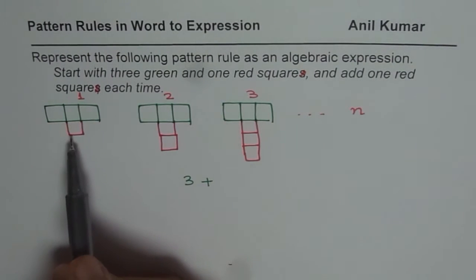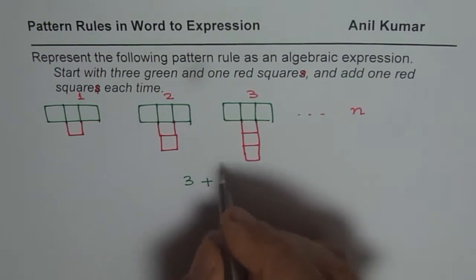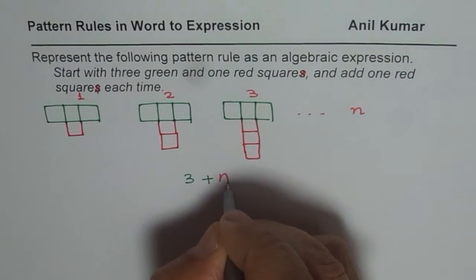So the pattern rule will be 3 for green plus how many red? In pattern 1 we have 1 red, in 2 we have 2 red. So it is same as the number of pattern. So we can write 3 plus n.